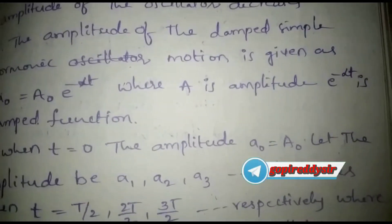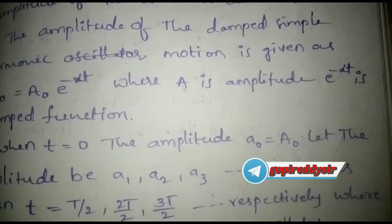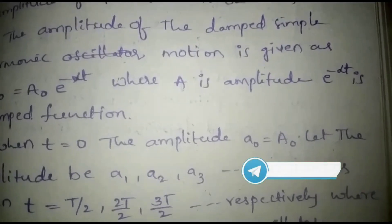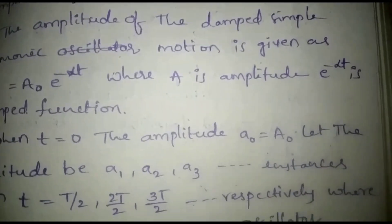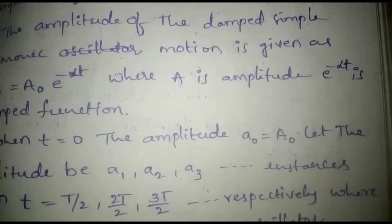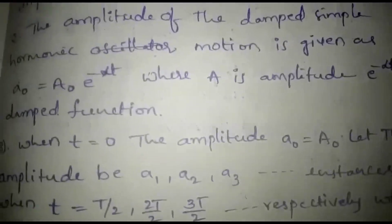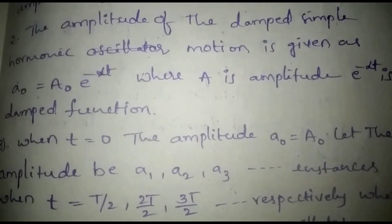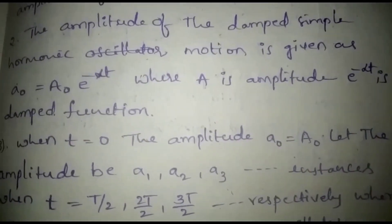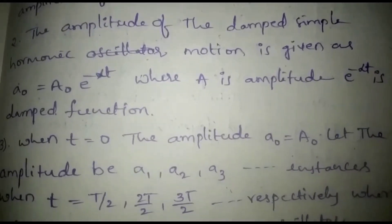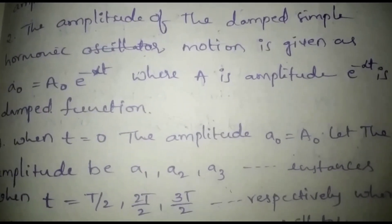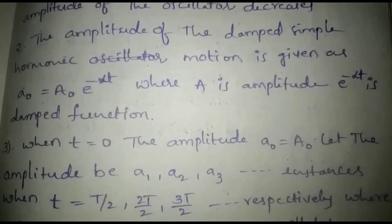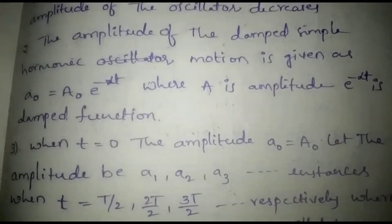The amplitude of the oscillator is given by A = A₀ e^(−αt). This function represents the amplitude, where e^(−αt) is the damping function.